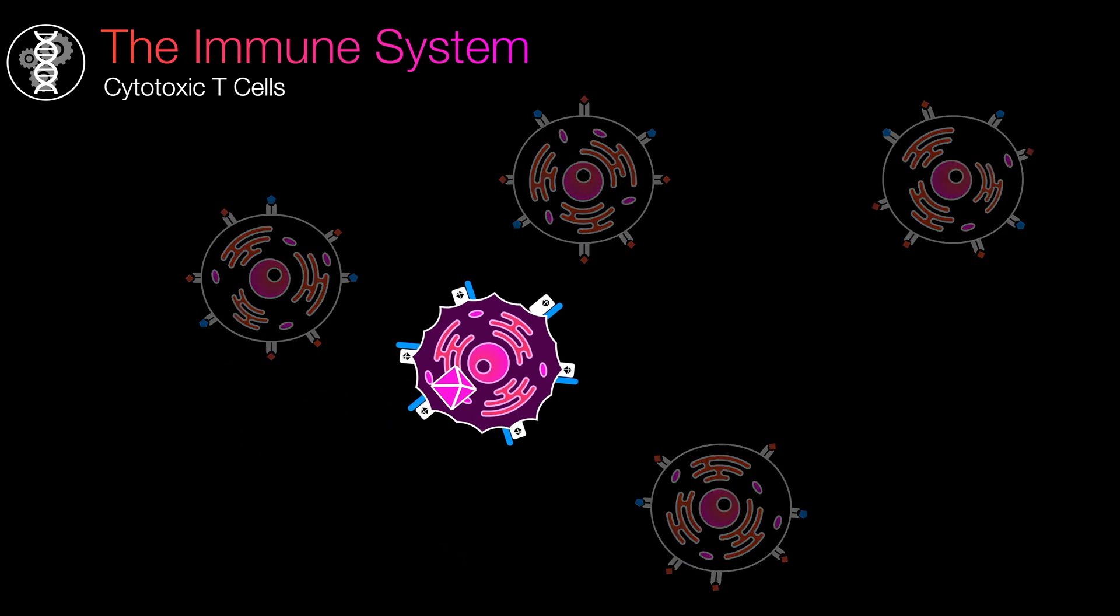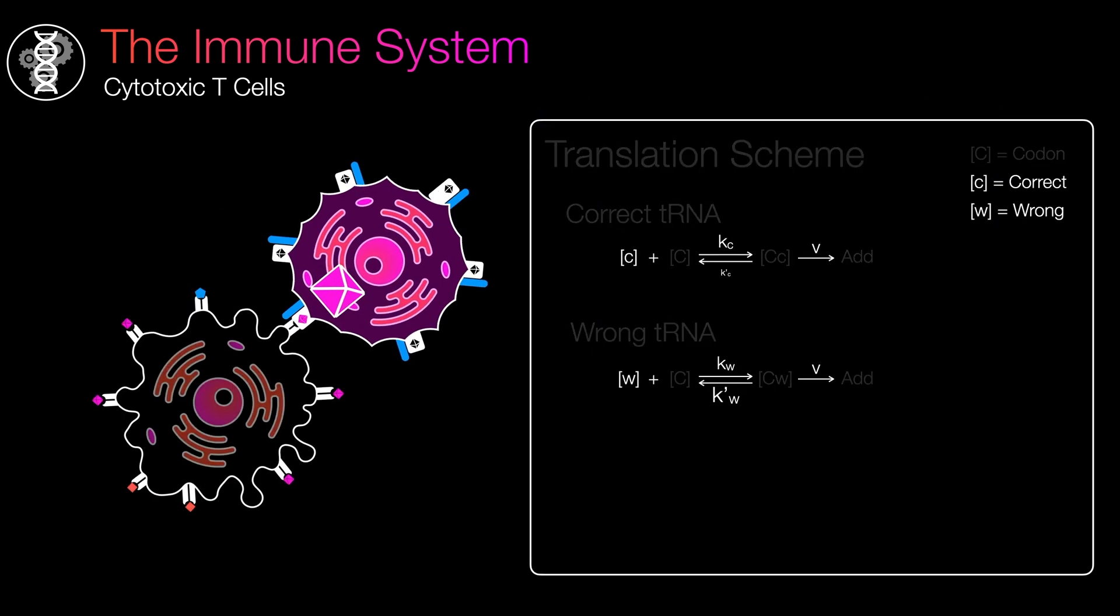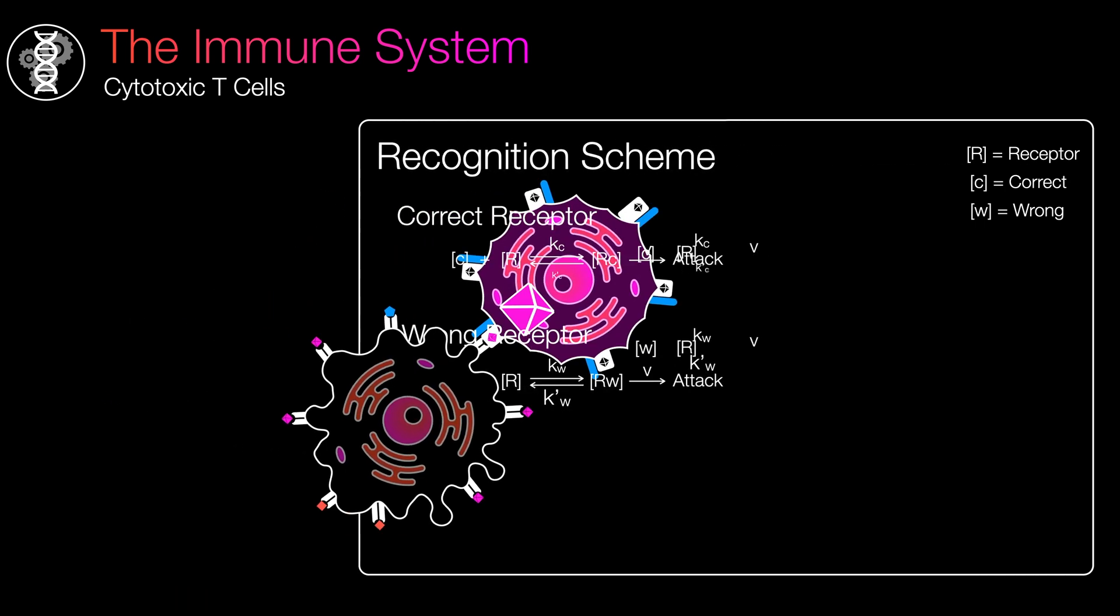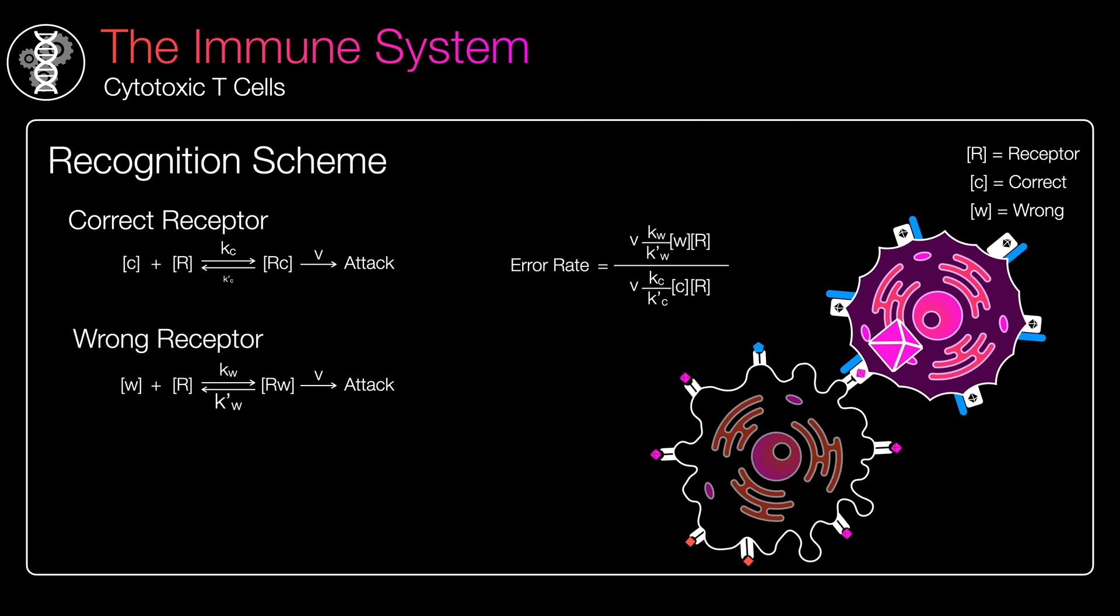If that specific receptor sticks to the antigen display, however, the T cell goes into attack mode. If we were to perform the same calculation as earlier with the ribosome, the error rate would be at 10% minimum. And this is not even taking into account the fact that there is only one correct pairing and billions of incorrect ones. Without kinetic proofreading, we're all going to get autoimmune disease.